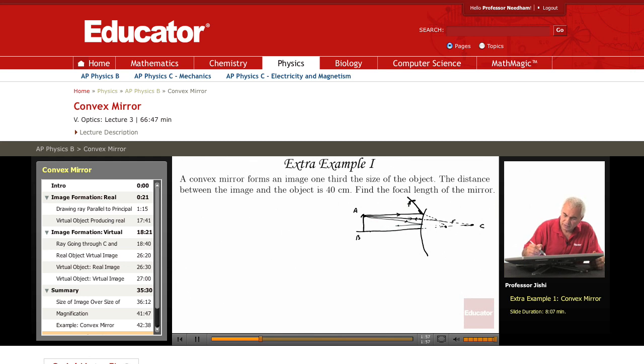So all these reflected rays—this one, and this one, and this one—they are diverging, they are moving away from each other, but they all seem to come from one point here. This is the image, so this is A prime, B prime.